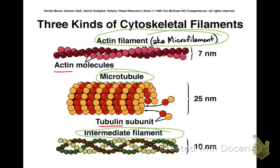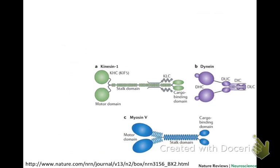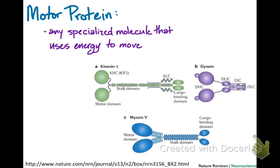Before I go into any of the fibers in detail, I want you to look at motor proteins. Motor proteins are specialized molecules that use energy to change their shape and move. We use them to move our muscles and carry organelles around, among many other things. Both microfilaments and microtubules have special motor proteins related just to them, and they run up and down the fibers of the cytoskeleton like tracks for a railroad car.